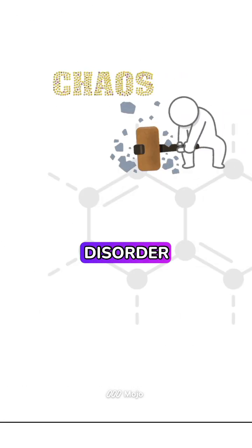Entropy is a measure of disorder or randomness in a system. In simpler terms, it tells us how spread-out energy is in molecules or systems.